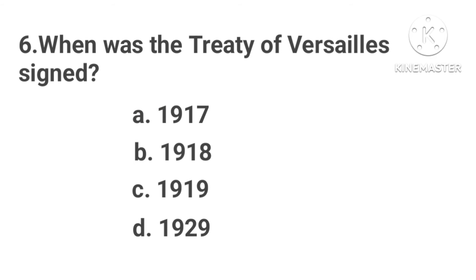When was the Treaty of Versailles signed? Option A: 1917. Option B: 1918. Option C: 1919. Option D: 1929.